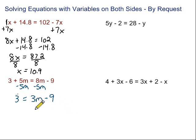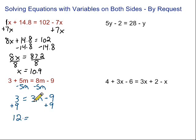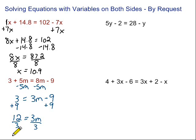Now all the variables are together, so we want to get rid of the stuff hanging out with the variable, starting with this minus 9. How do we get rid of a minus 9? Do the opposite — add 9. So we add 9 on both sides. 3 plus 9 is 12 equals 3m. Now the m is almost by itself — just got to get rid of that 3. That's multiplication, so we do the opposite and divide by 3 on both sides. 12 divided by 3 is 4, and all we're left with is m. So m equals 4.